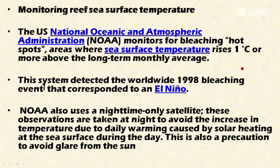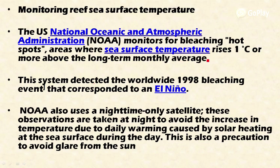The United States National Oceanic and Atmospheric Administration, that is NOAA, is monitoring oceanic temperature for bleaching hotspots. These are areas where the sea surface temperature rises one degree Celsius or more above the long-term monthly average.